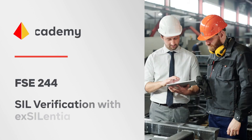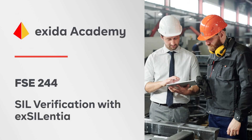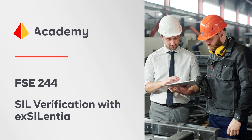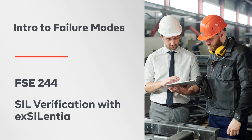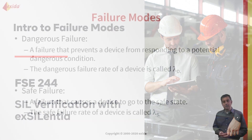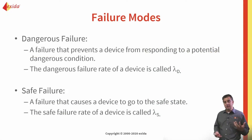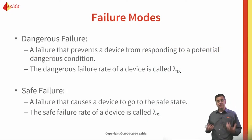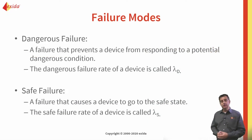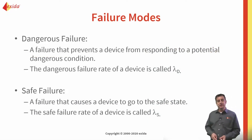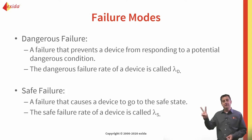The first thing we need to look at when we talk about probability of failure — and one of the key parameters in that equation — is the failure rate. When we talk about failures in safety and instrumented functions, we typically consider two different failure modes.